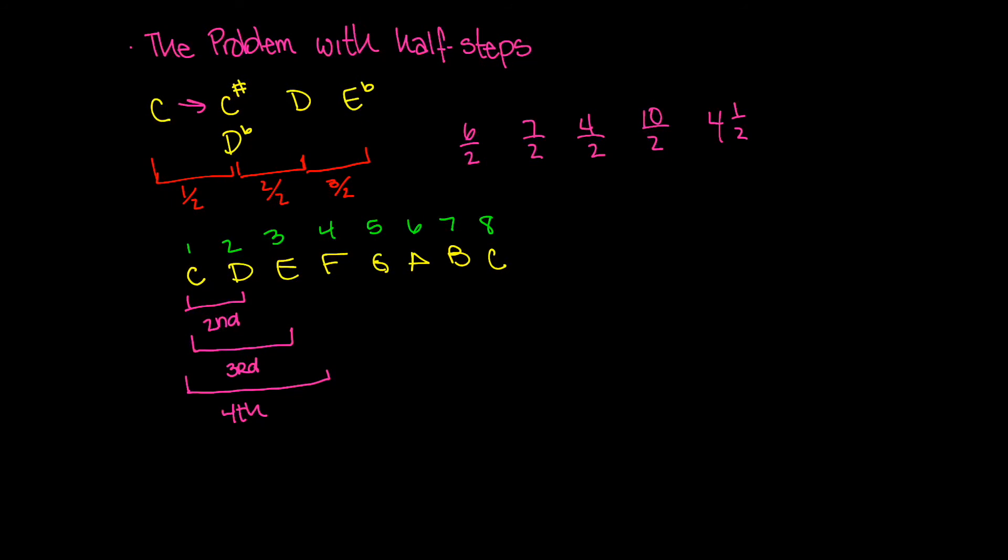Now what if I did the C minor scale? So C minor would have these notes. F, G, A flat, B flat, and C. Now if I look here, and actually let's label this as well. One, two, three, four, five, six, seven, and eight. And now this would be considered a second. This would be considered a third. And this would be considered a fourth.